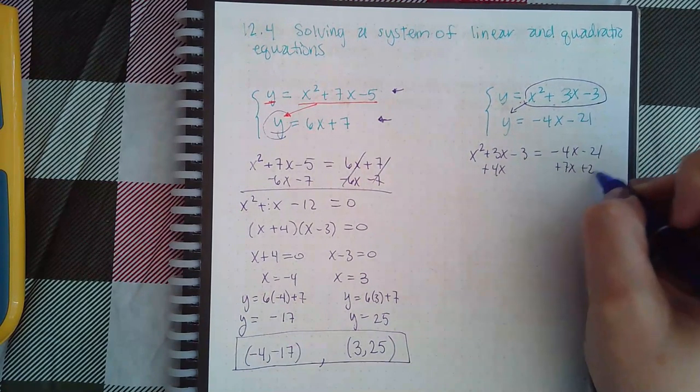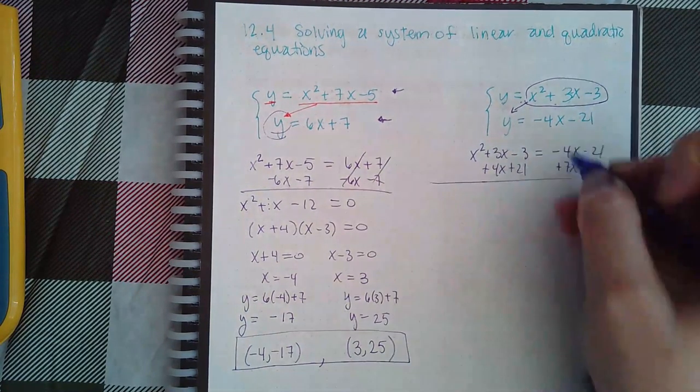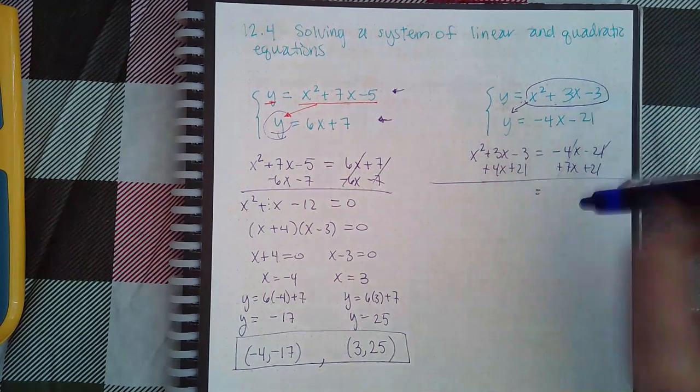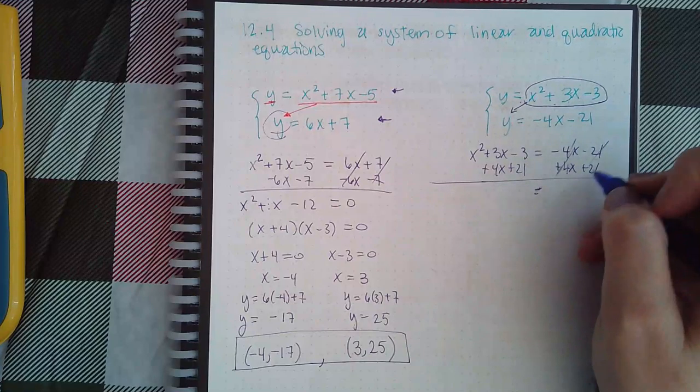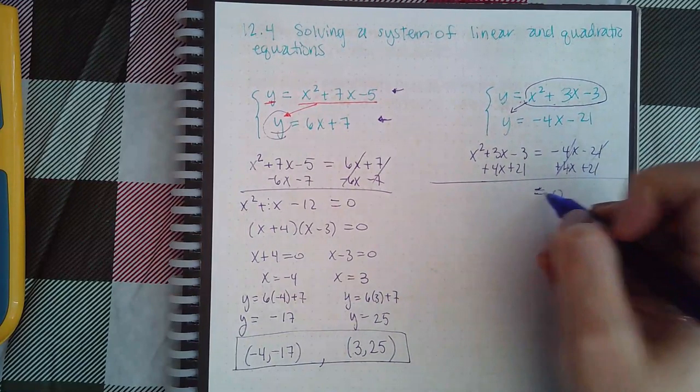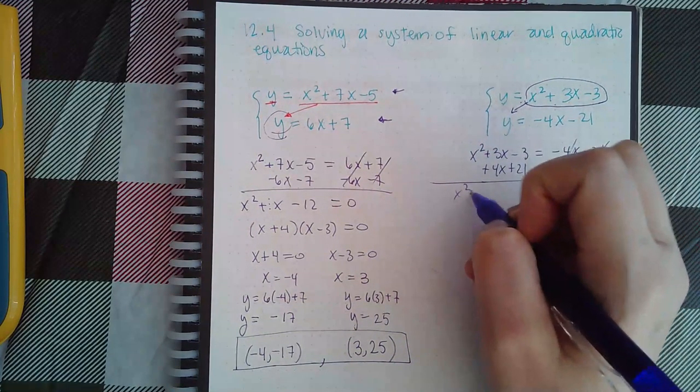Then I'm going to try to get everything over to one side. Those cancel, those cancel. I have nothing on the right-hand side, and over here I have x²+7x+18.